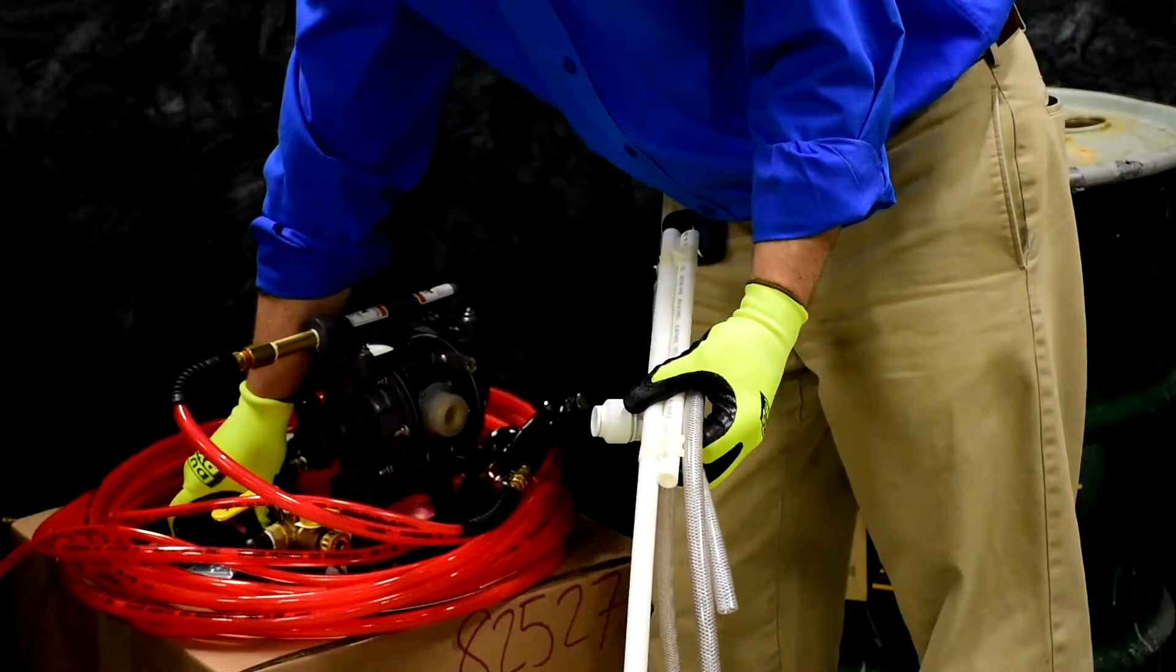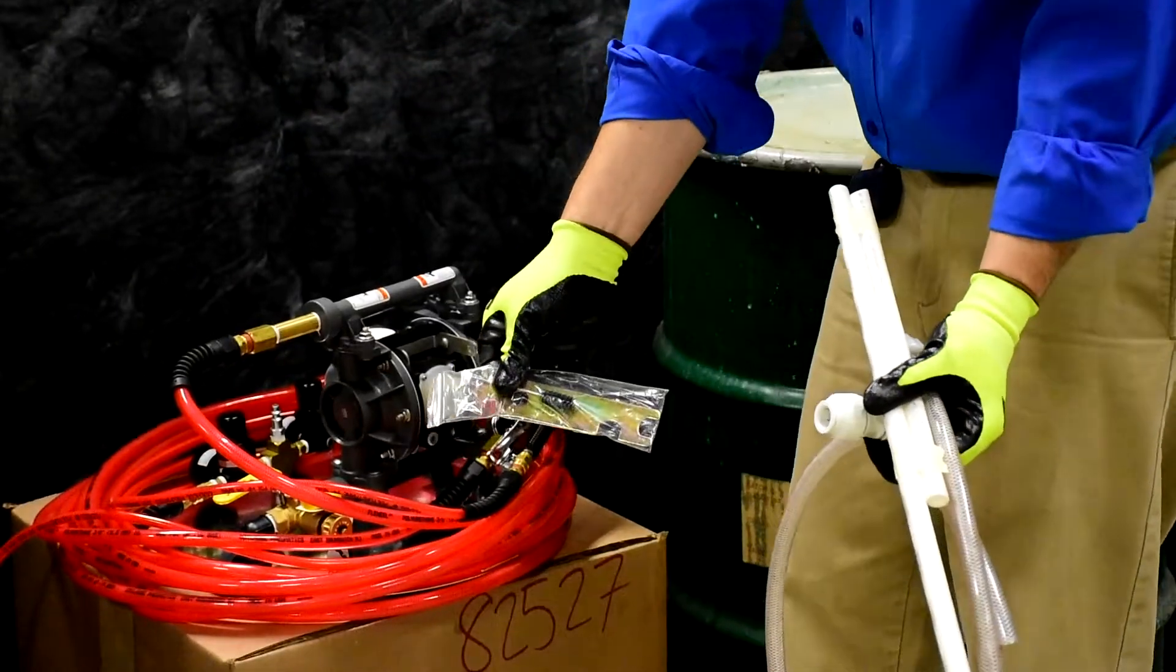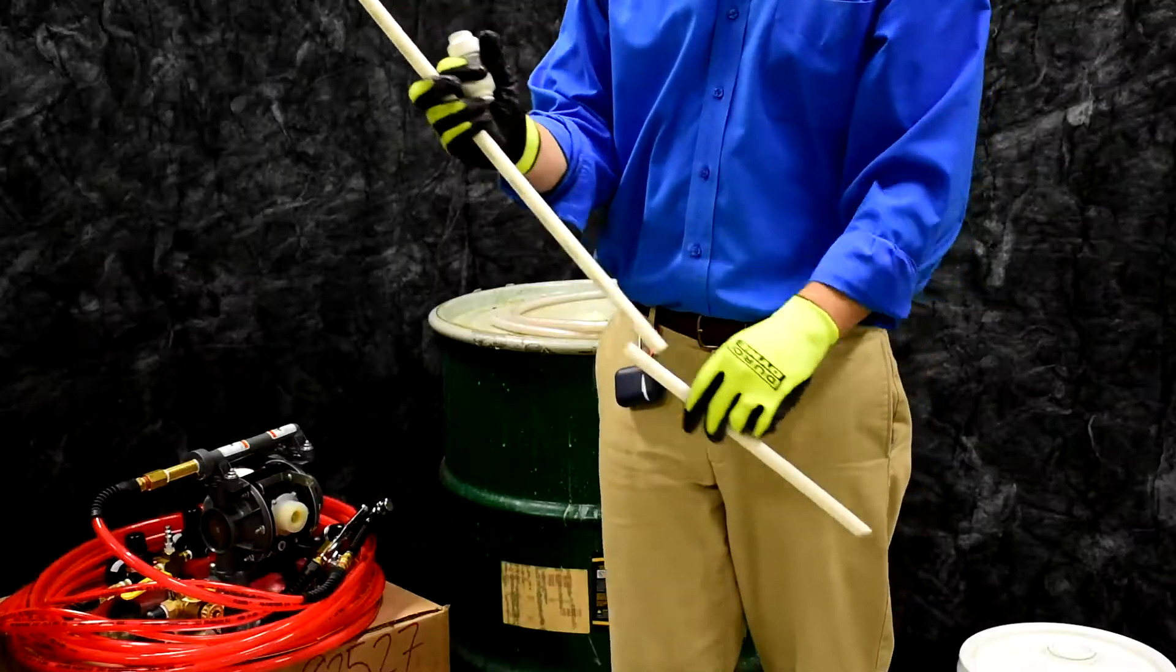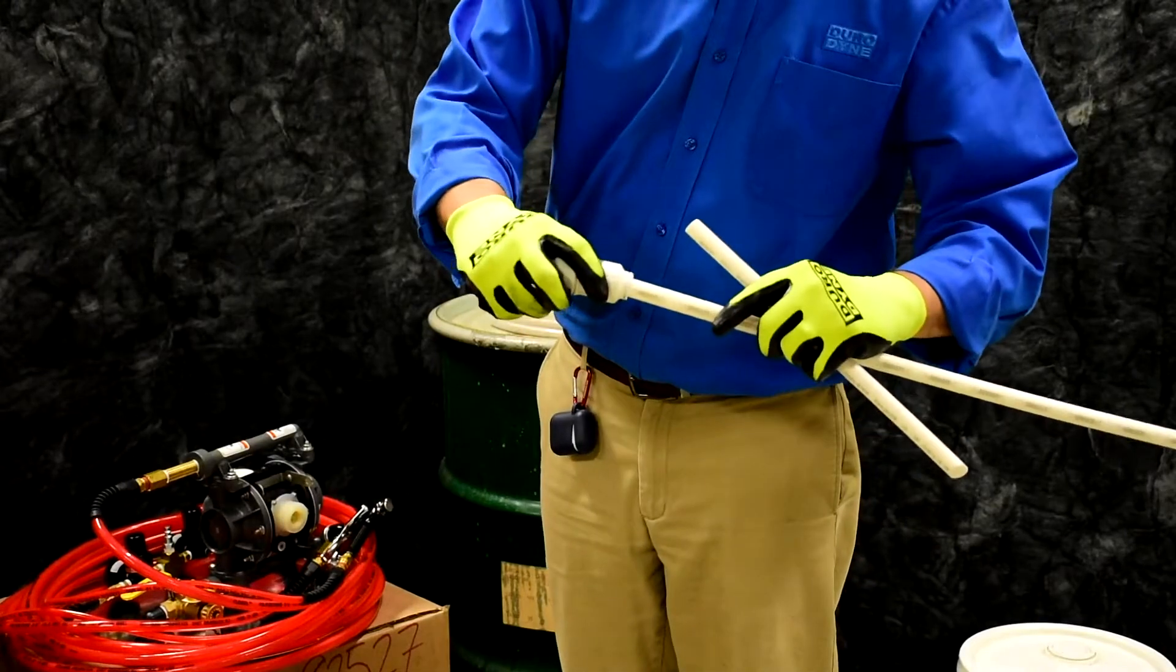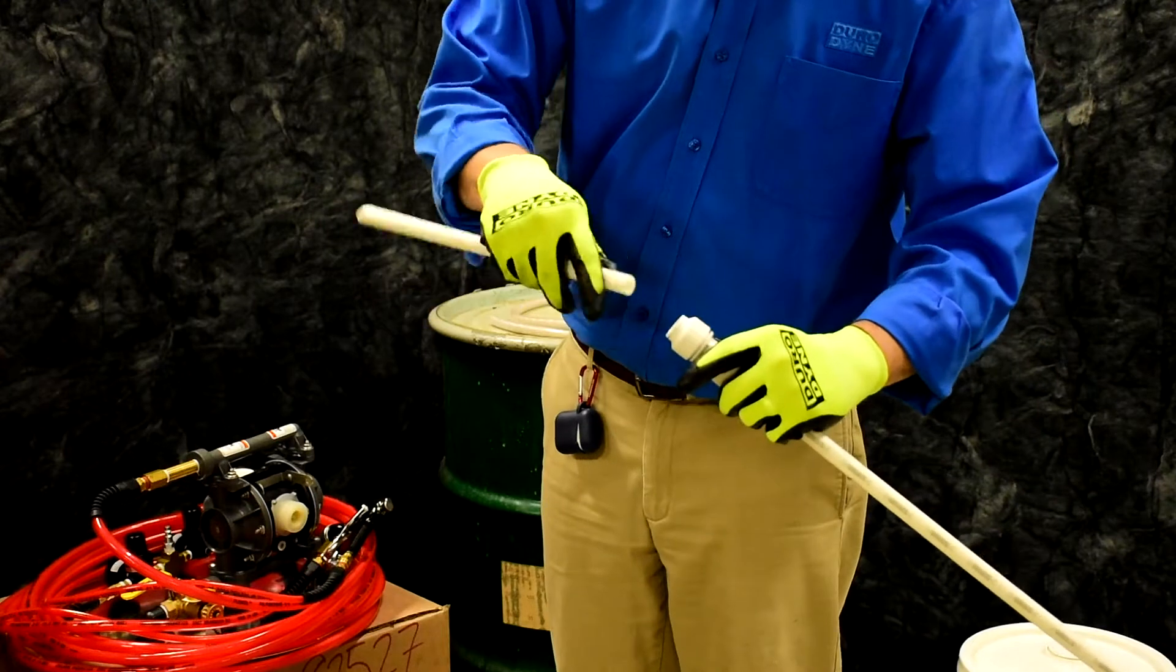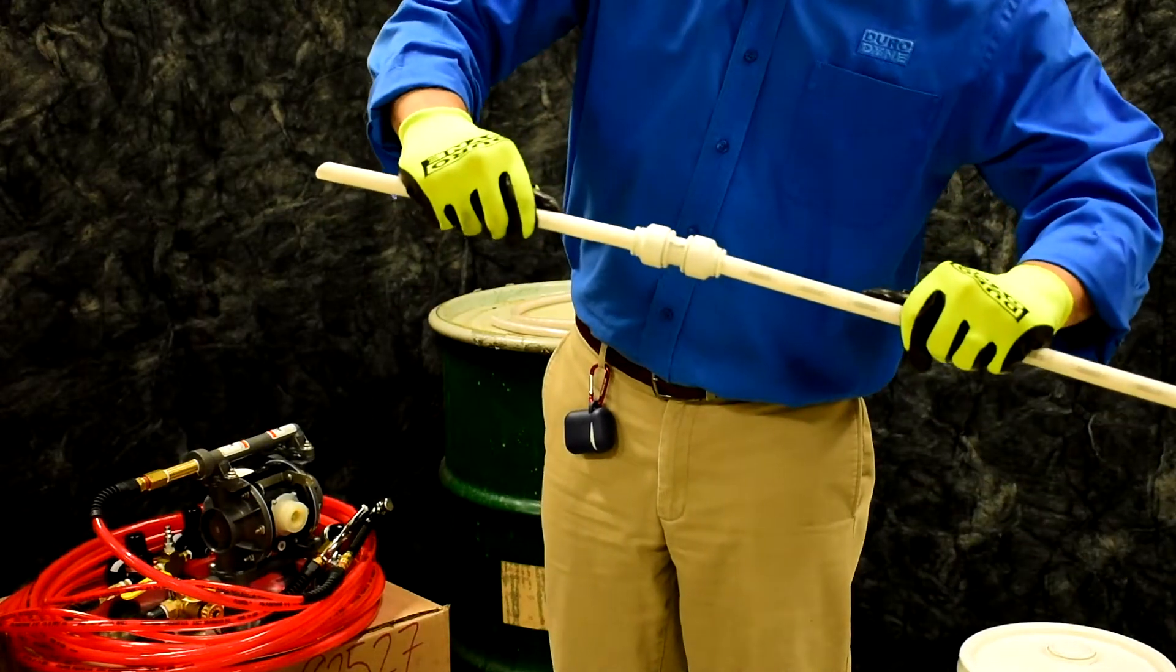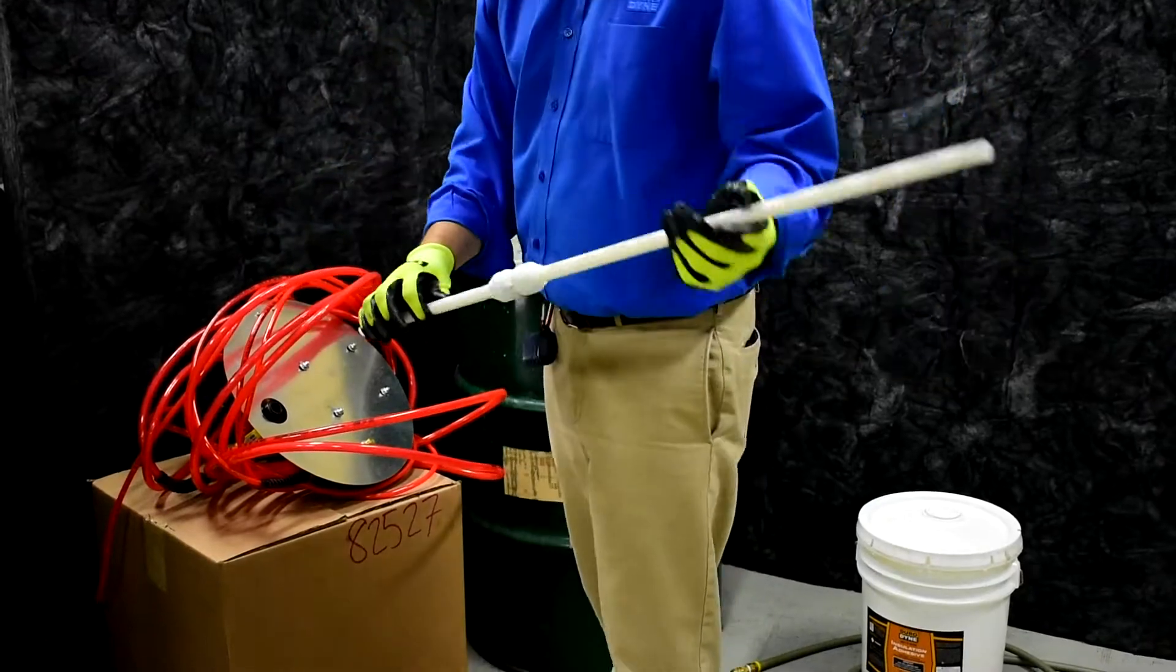With two pickup tubes, the Super Sprayfast is designed to work with either a 5-gallon bucket or 50-gallon drum of quality Durodyne water-based adhesive. Simply use the provided coupling to fit the tubes together in order to reach the bottom of the drum. When seating the tubes in the fitting, be sure to push firmly to ensure a tight fit.